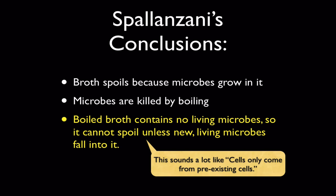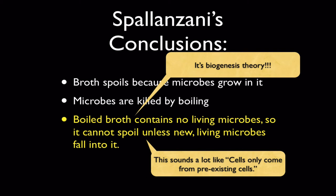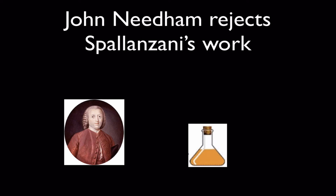This aligns with the third part of the cell theory: cells only come from pre-existing cells. That means microbes can only come from pre-existing microbes. If you kill them, they can't magically come back to life or magically appear. This is what we call biogenesis theory — that life only comes from life.